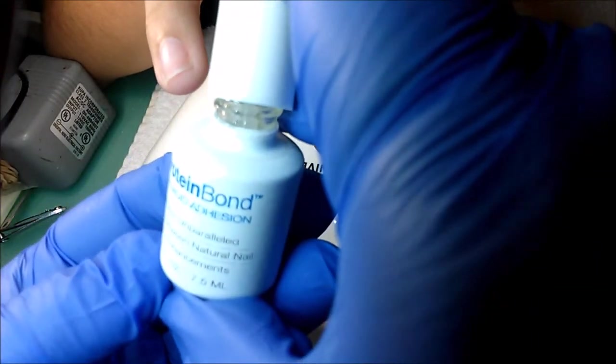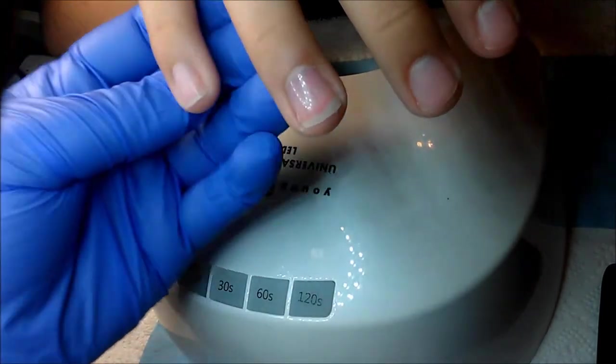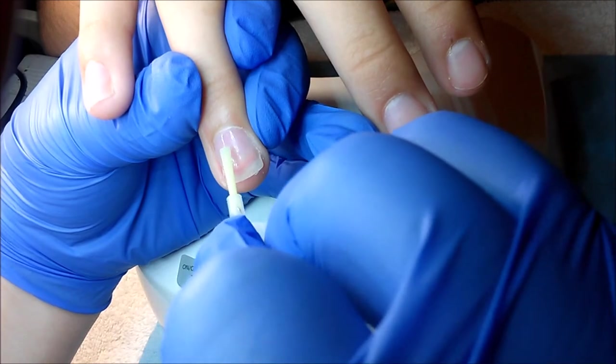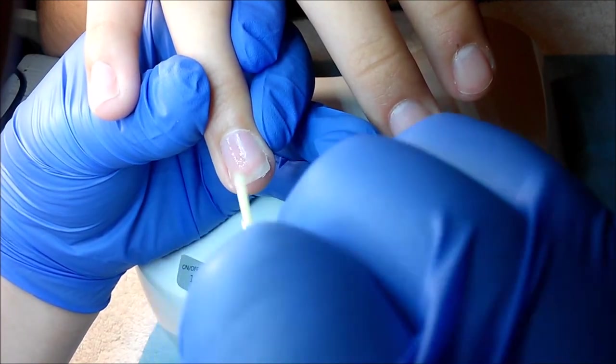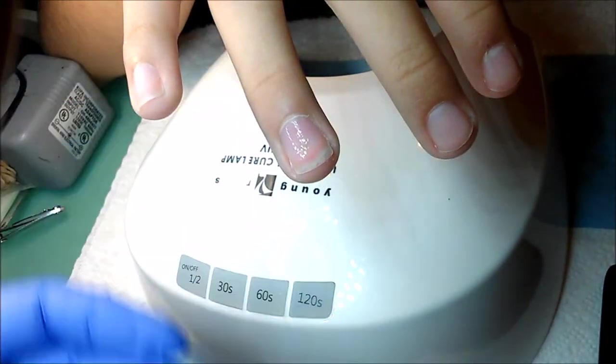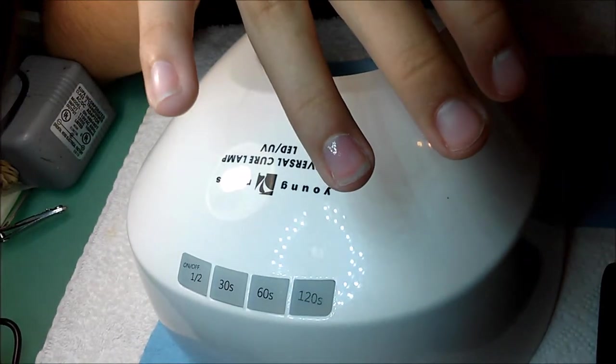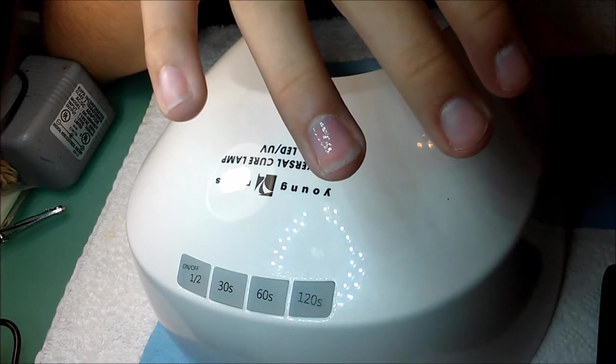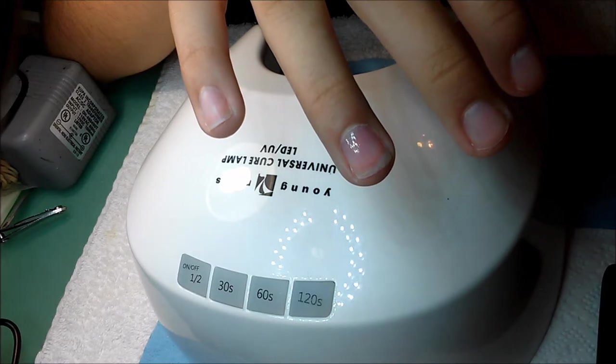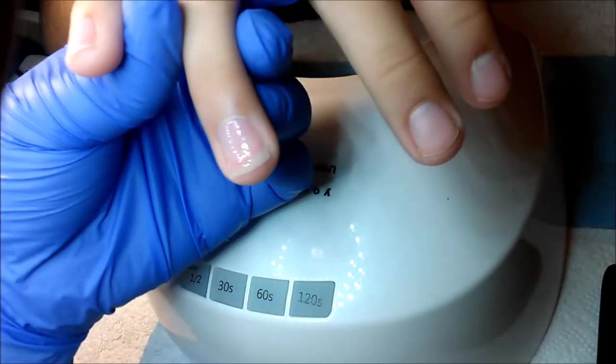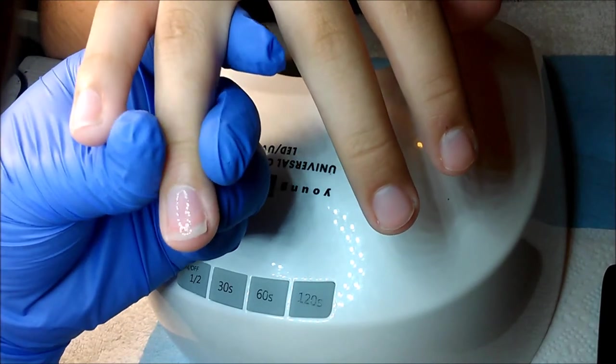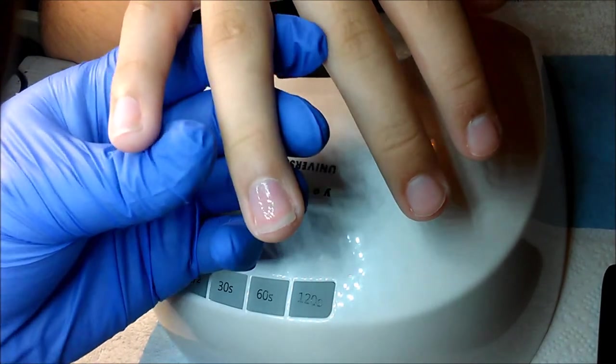And next you want to go in with your protein bond. And this will just help the lacquer adhere a little bit better to the base gel layer. This base gel is amazing. It smooths things out really, really well. And you guys are really going to have to stay tuned for the removal video that's going to be coming up shortly. You are going to be amazed at how quickly this removes.